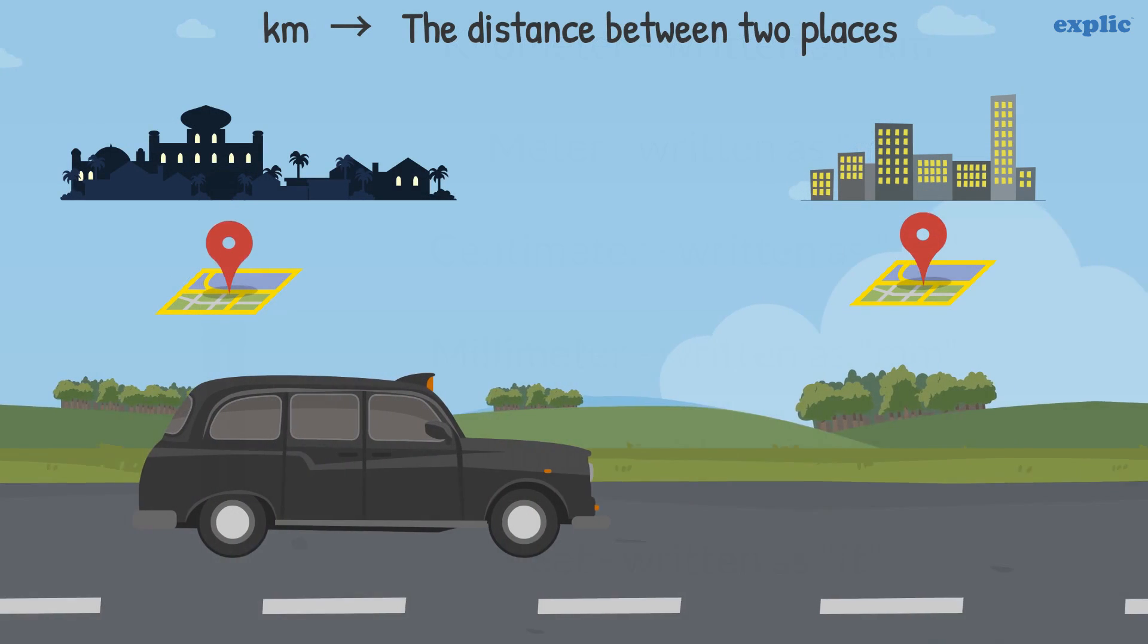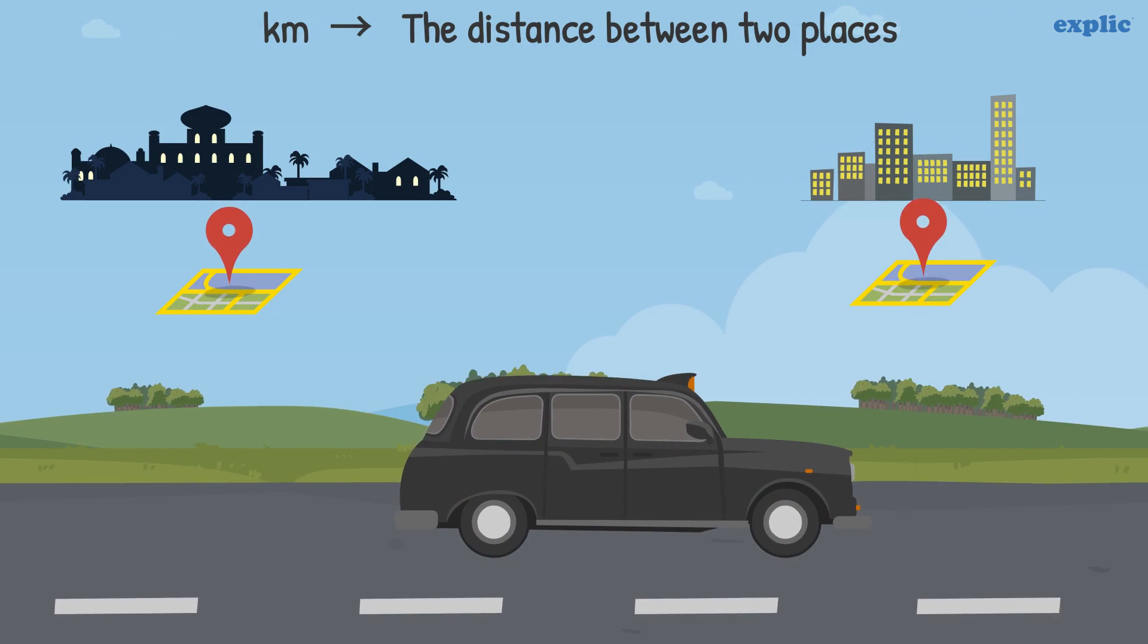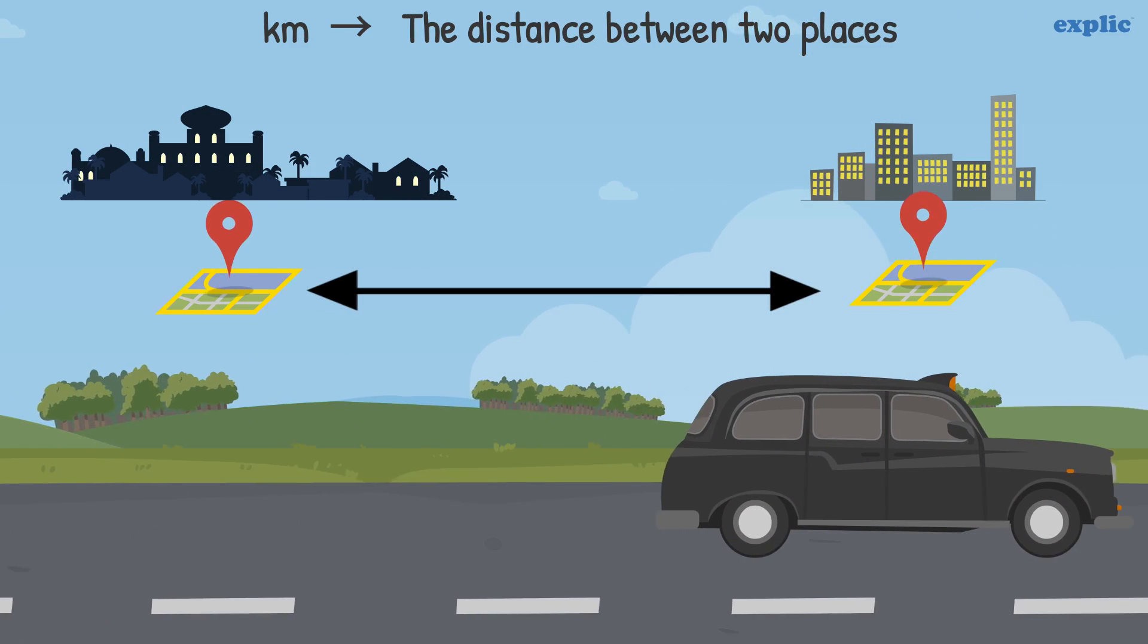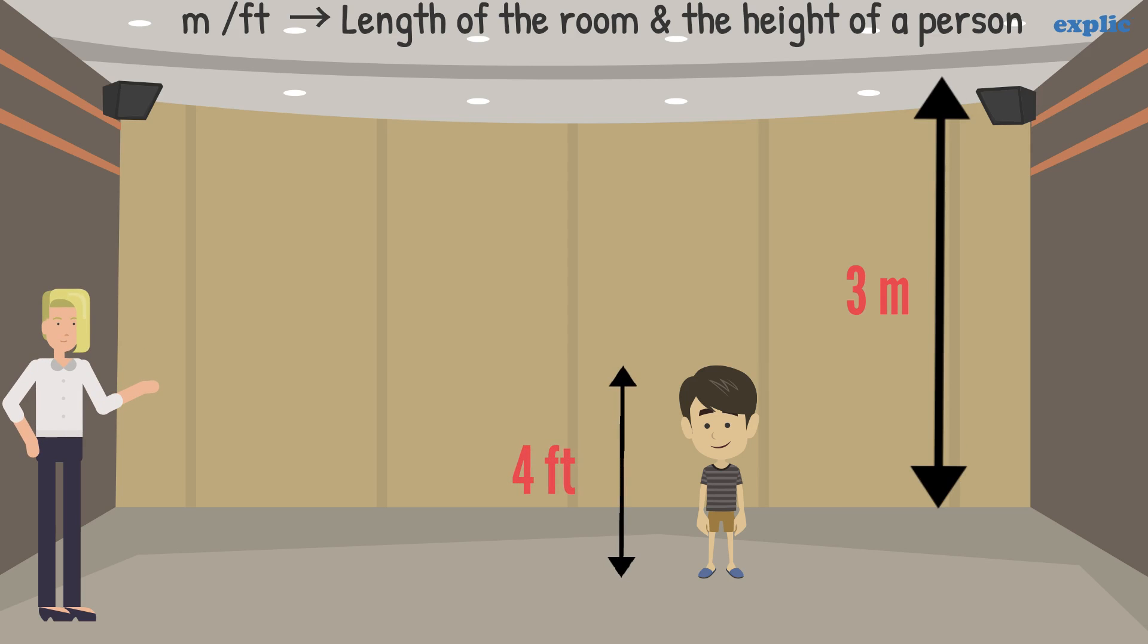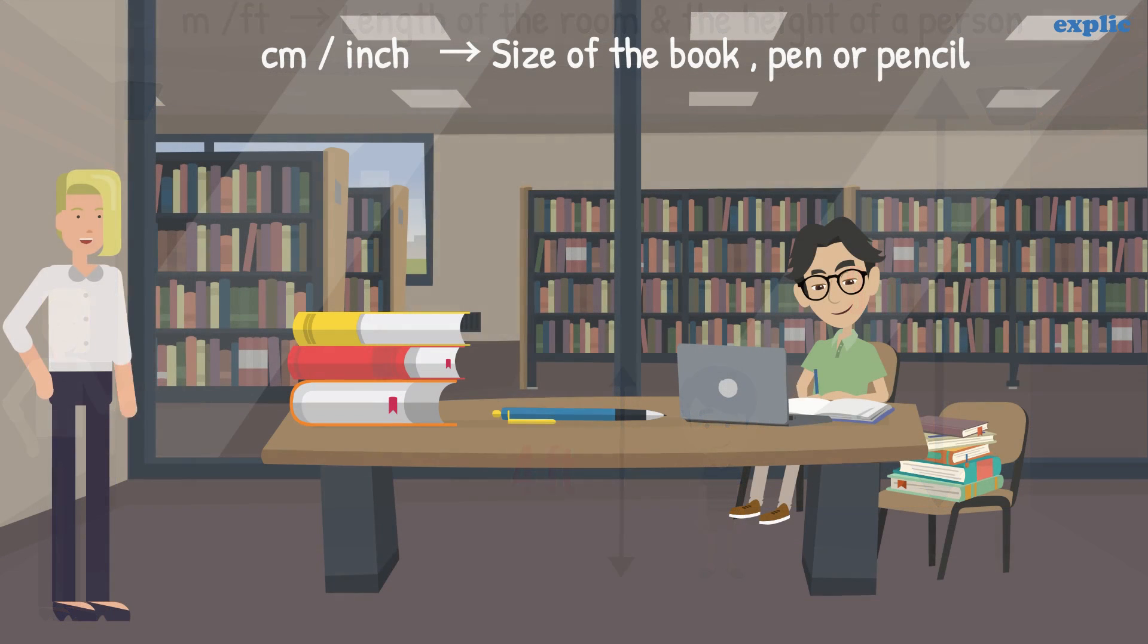The distance between two places is generally measured in kilometers. The size of a room or height of a person is measured in feet or meters. You can measure the size of your book and pen in inches or centimeters.